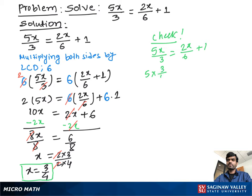Now we substitute the value of x in this equation. So we can write 5 times 3 over 4 over 3 equal to 2 times 3 over 4 over 6 plus 1. Now 5 times 3 which is 15 over 4 times 3 equal to 2 times 3 which is 6 over 4 times 6 plus 1.